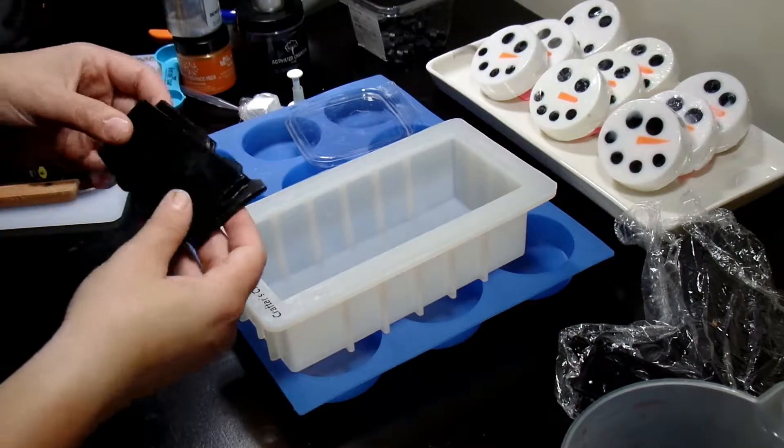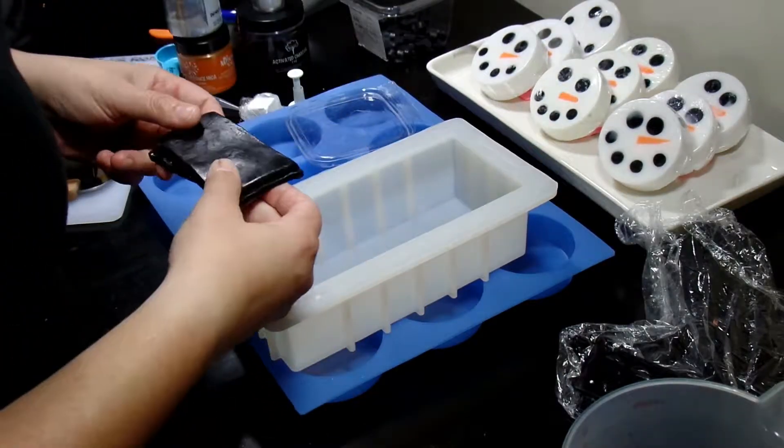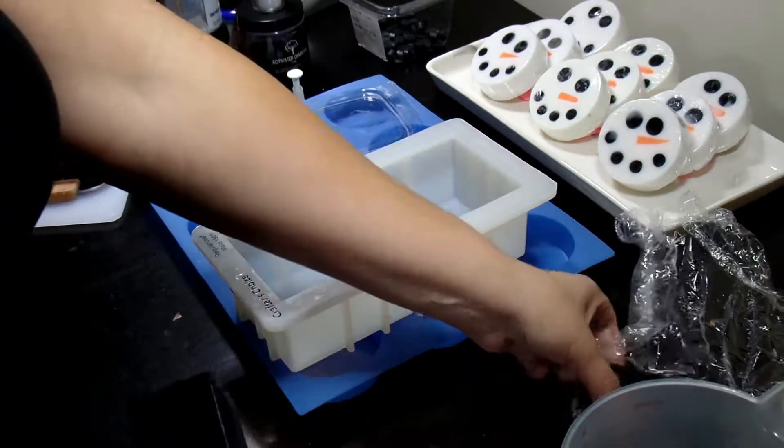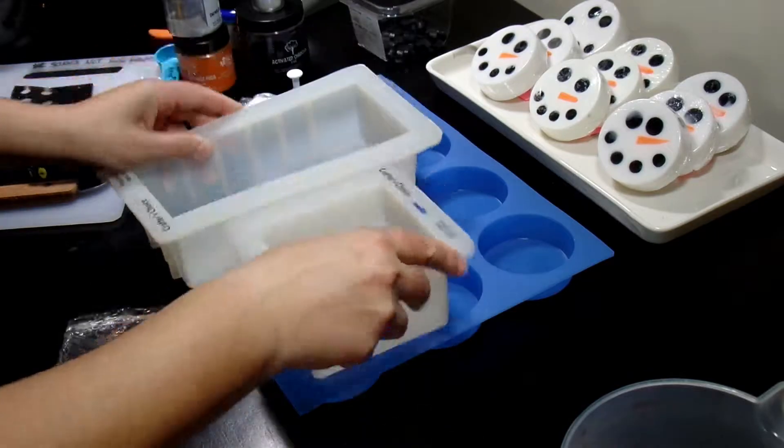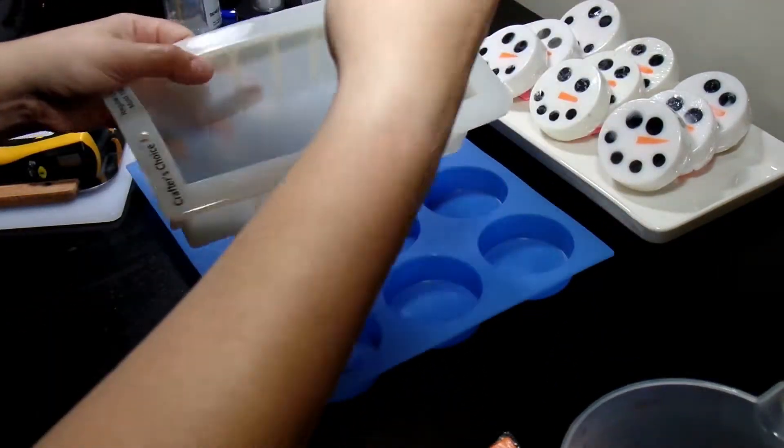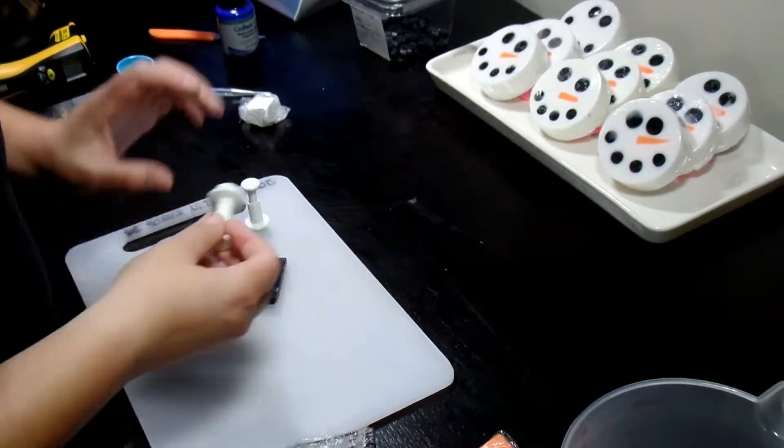As of orange melt and pour, that's just clear melt and pour cut up and colored orange. For the black, which you are going to want to use clear for your black, you're going to use your clear melt and pour. I have cut up my melt and pour, I have colored it, and I have poured it into my molds. Out of the molds, we're done with these.